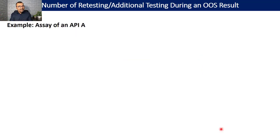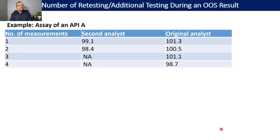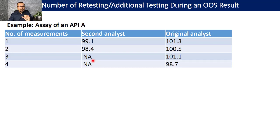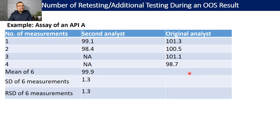Let us take an example of API A, looking at the assay result. The original result was out of spec, no root cause was identified, and the quality unit decided to go for additional testing using the 2 plus 4 plan. The specification for assay is 98.0 to 102.0 percent. The second analyst conducted two re-measurements and both results met the specification. The original analyst then prepared four preparations, also found within specification. The mean of the six measurements, standard deviation, and percent RSD are then calculated.